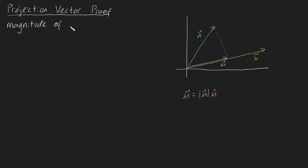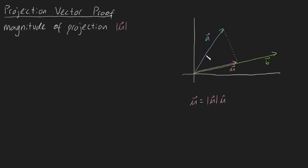So let's begin by finding the magnitude of U. Because what we've constructed here is a right angle triangle, if we were able to find this angle theta, then we can use cosine theta to help us out. We know that cosine theta is going to be equal to adjacent over hypotenuse, so this is going to be equal to the magnitude of U divided by the magnitude of A — it's going to be this distance divided by this distance.